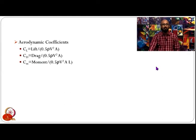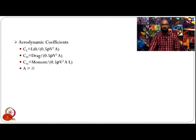The moment coefficient would be defined using half rho v squared A times the reference length l, which depends on the moment being considered. The reference area A is called the reference area and is typically a function of the lift-generating component.